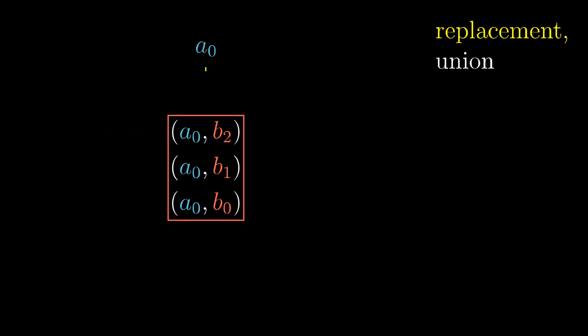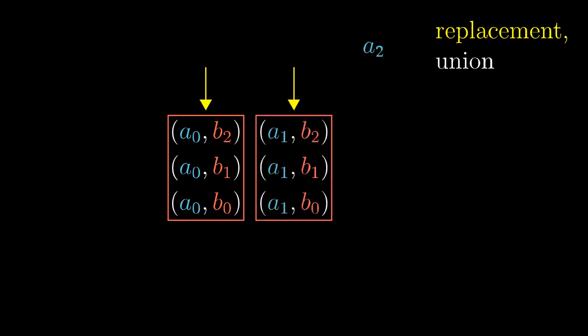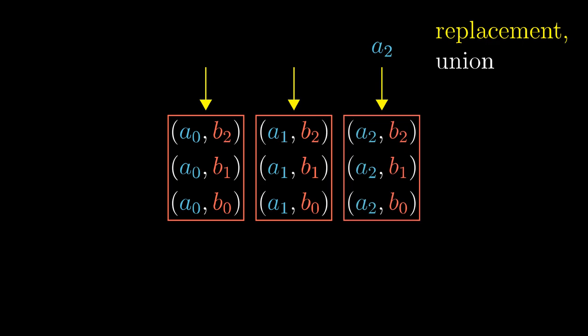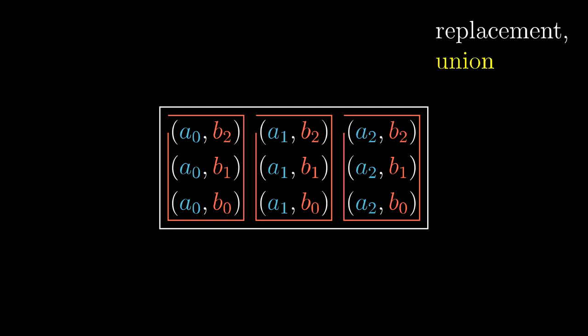And since we could pick the initial element A, we can construct every column of the Cartesian product. The trick is to apply the axiom of replacement one more time. So far, we have described a process that takes an element of set A and creates a column. By the axiom of replacement, we can take all the columns and pack them into a set. This is not a Cartesian product since every column is packed in an individual set, but we can easily fix this with the axiom of union.